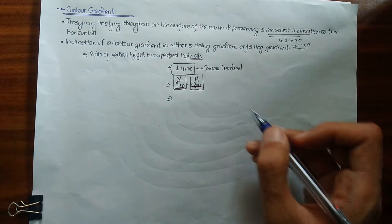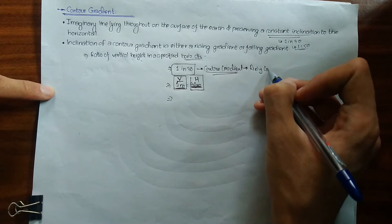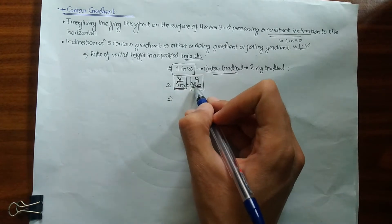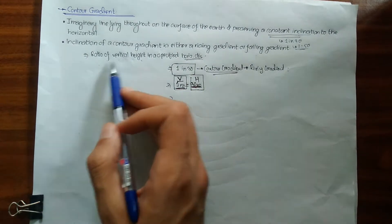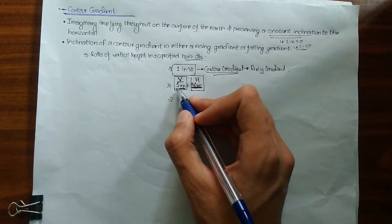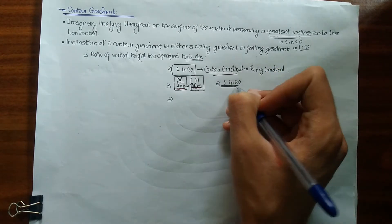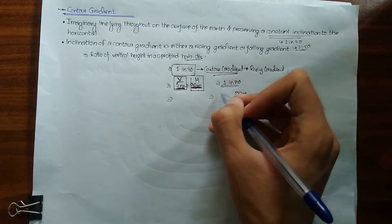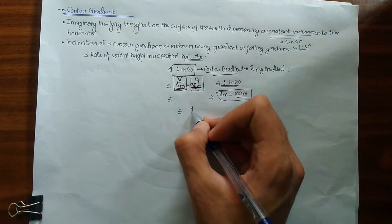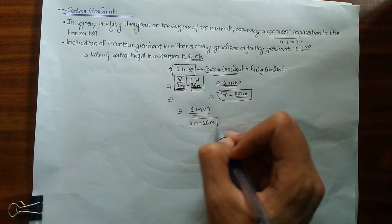To make this clear, consider a contour gradient of 1 in 30 with a rising gradient. This means for 1 meter of vertical height there is 30 meters of horizontal distance. For a contour gradient of 1 in 50, a vertical rise of 1 meter occurs over a horizontal distance of 50 meters — this is a lesser gradient. For a higher contour gradient of 1 in 20, we get 1 meter vertical rise over just 20 meters horizontal distance.